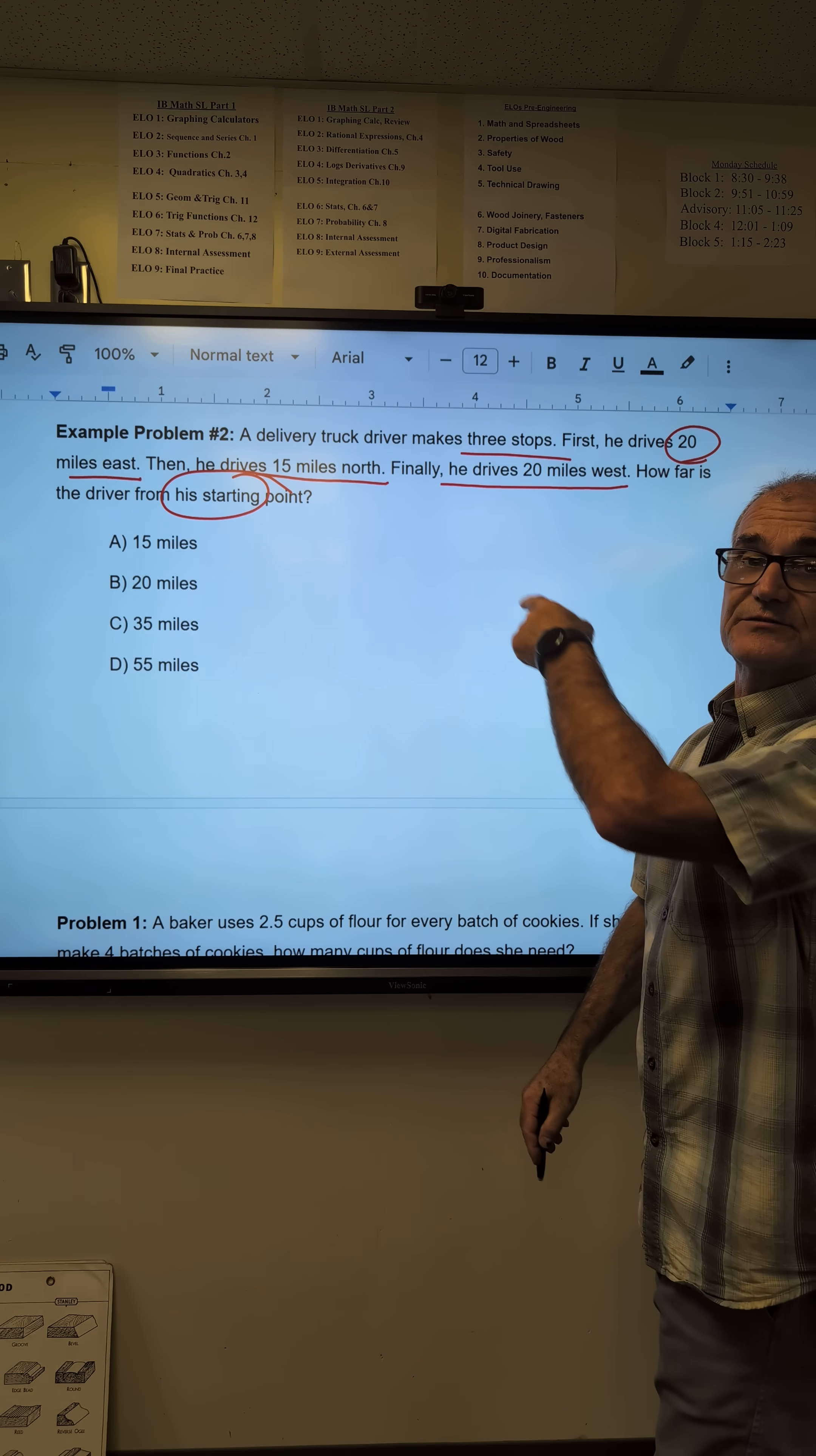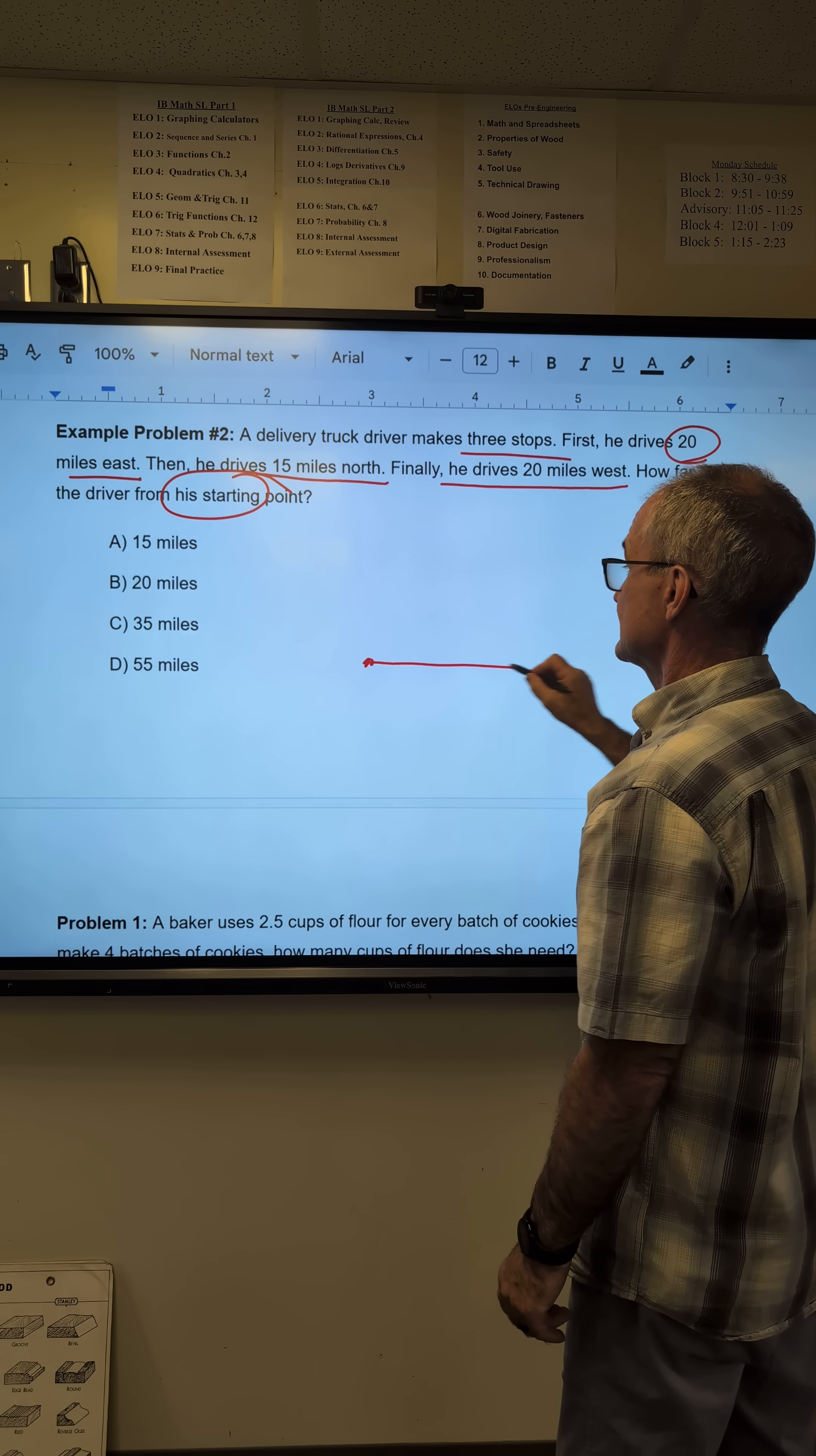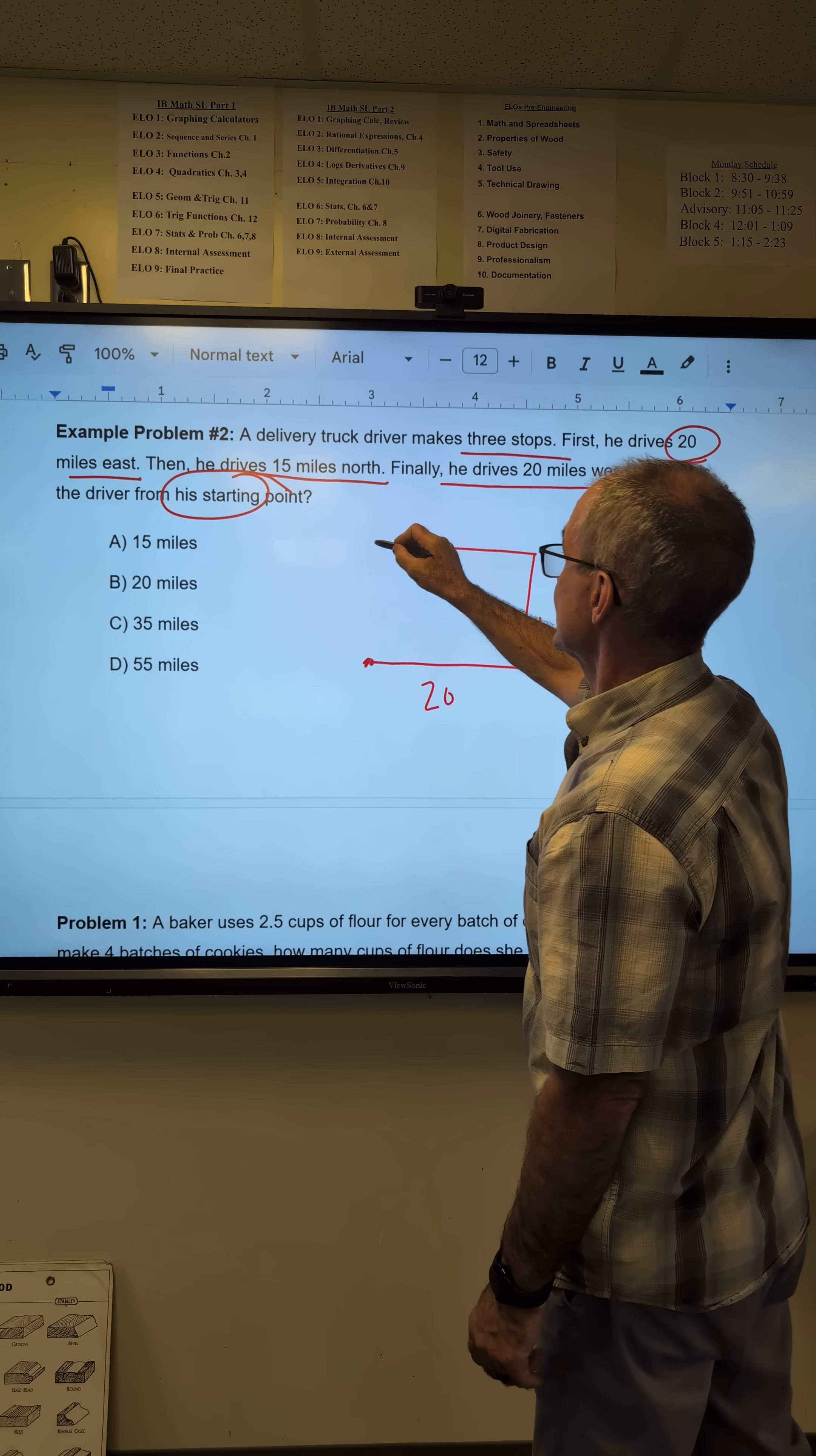Step two, draw a picture from that sentence. He starts right here, drives 20 miles east, then he drives 15 miles north. Finally, he drives 20 miles west.